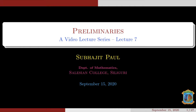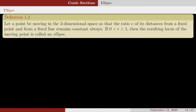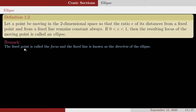Today we will see the ellipse. Let us recollect the definition of an ellipse. A point moves in the two-dimensional plane such that the ratio e of its distances from a fixed point and from a fixed line remains constant always. If the value of this constant lies between 0 and 1, the resulting locus is called an ellipse. The fixed point is called the focus and the fixed line is known as the directrix of the ellipse.